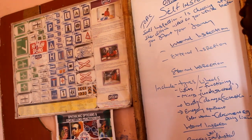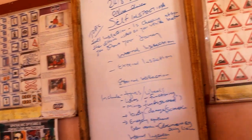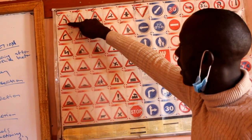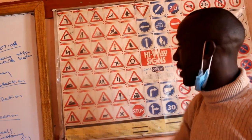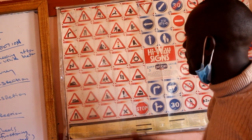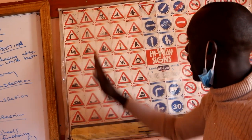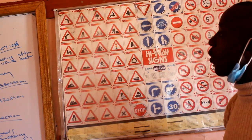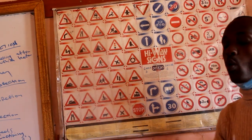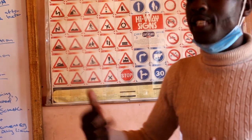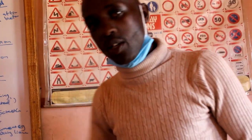For example, sign number one means bend to the left ahead, and the second one means bend to the right ahead. Those signs are warning signs — they warn you and inform you there is something ahead of you.